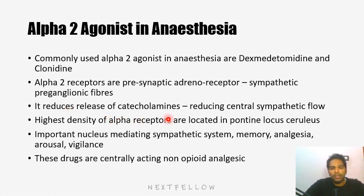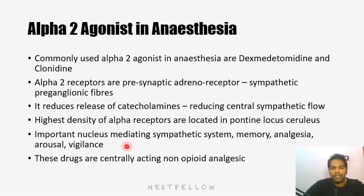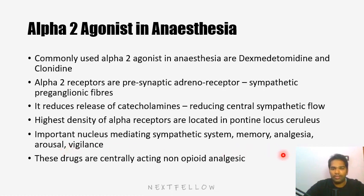There is a nucleus called the locus ceruleus which is present in the pontine area of the brain. This nucleus contains the maximum number of alpha-2 adrenergic receptors. The functions of this nucleus include mediating the sympathetic nervous system, memory, analgesia, arousal and vigilance. If you inhibit this nucleus, all these functions will be lost — that is very useful in anesthesia. And this is an MCQ point.